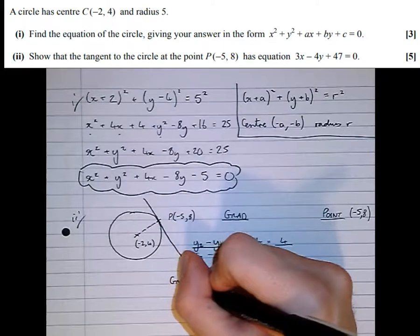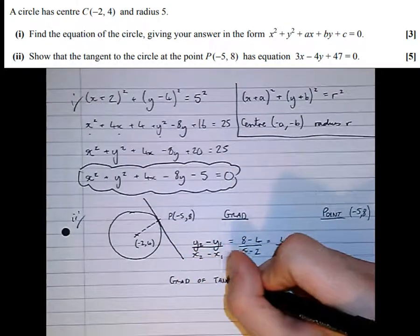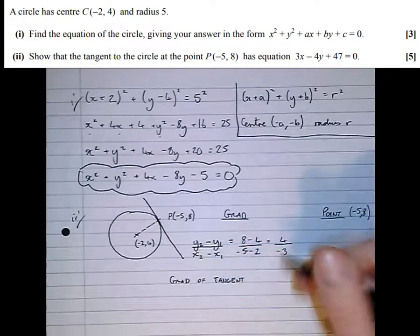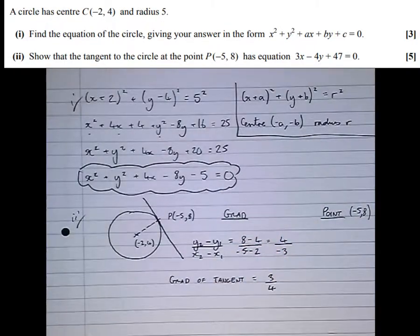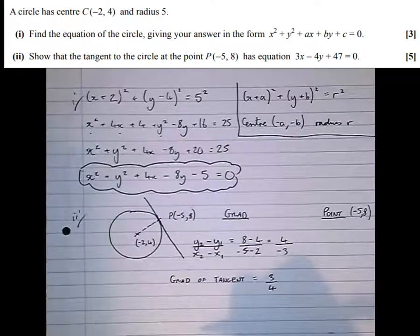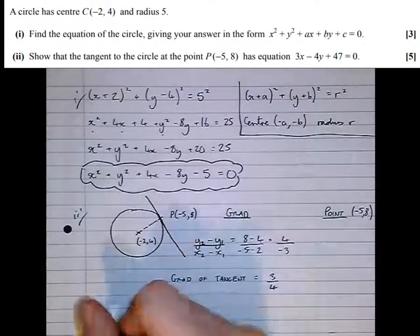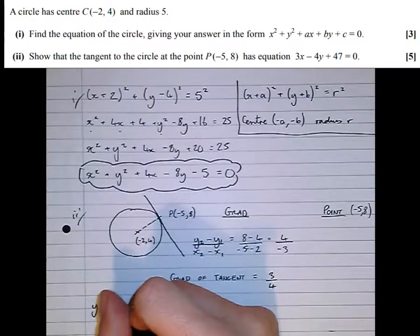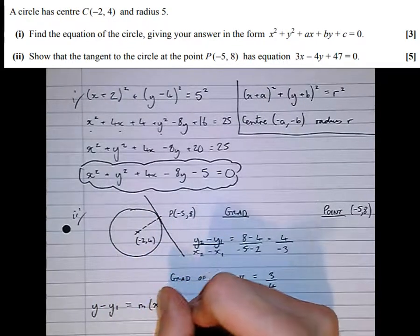Okay, so that's the gradient of the normal. The gradient of the tangent must be the negative reciprocal of that, which is 3/4—flip it, then change the sign. So we've got what we need to find the equation of the tangent: a point and the gradient.